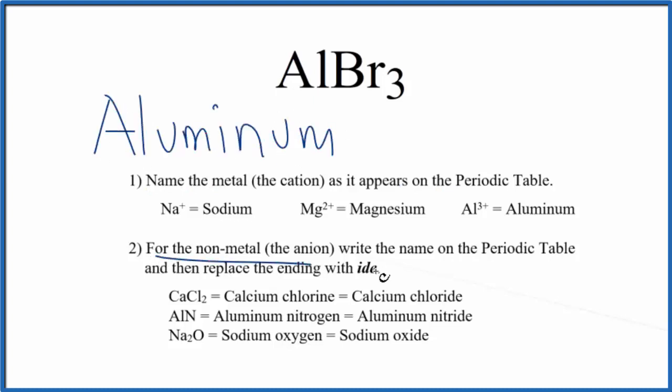Then we write the name for the non-metal, also as it appears on the periodic table. Br, that's bromine, lowercase b. Next, we're going to replace the ending with IDE. So we make this IDE.